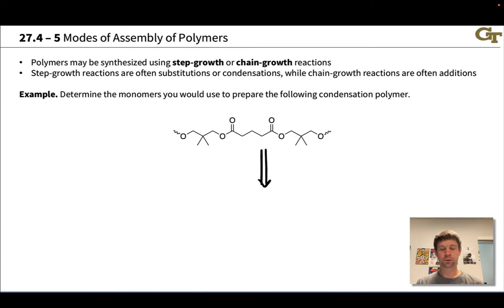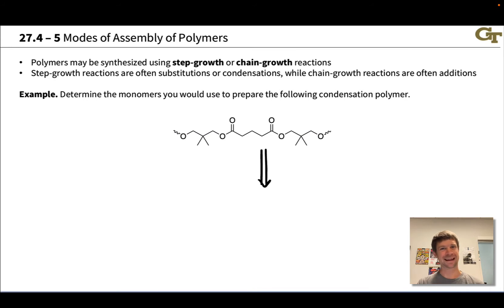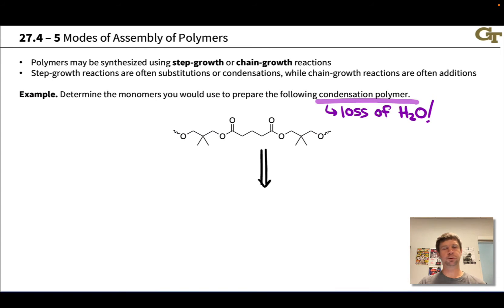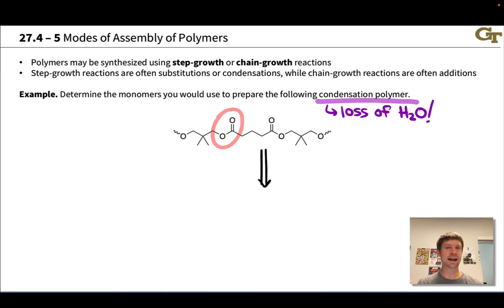In the next example, we're asked to determine the monomers we would use to prepare a given polymer, noted as a condensation polymer. Condensation polymers come from polycondensation reactions, which involves the loss of a small molecule — water most commonly, although small alcohols can also be lost. In terms of polycondensation, we typically think about nucleophilic acyl substitution reactions that establish functional groups that are carboxylic acid derivatives, such as esters and amides. We can see that this polymer is a polyester.